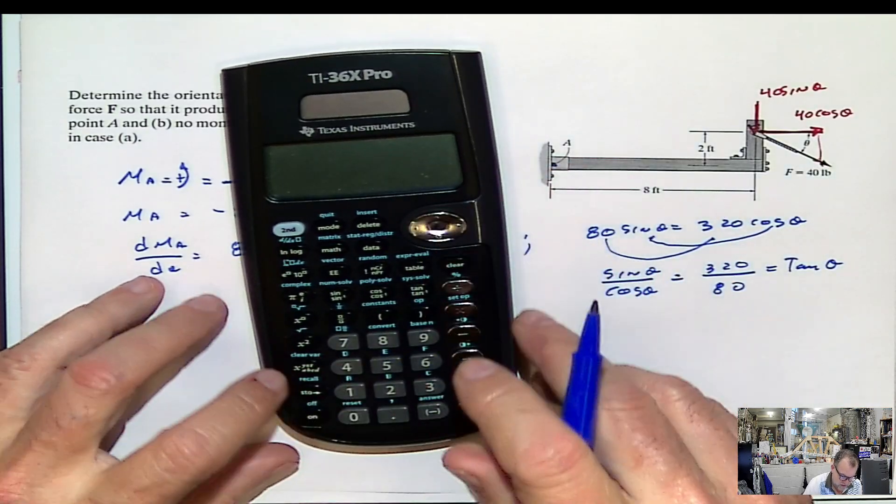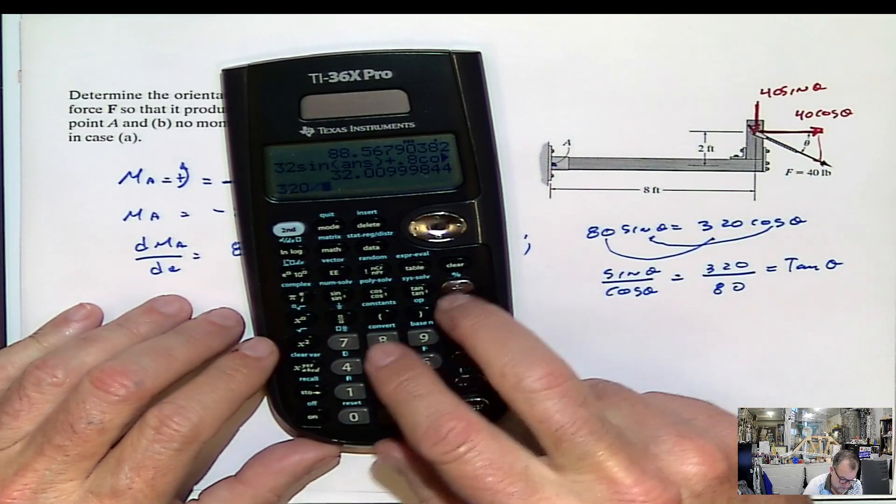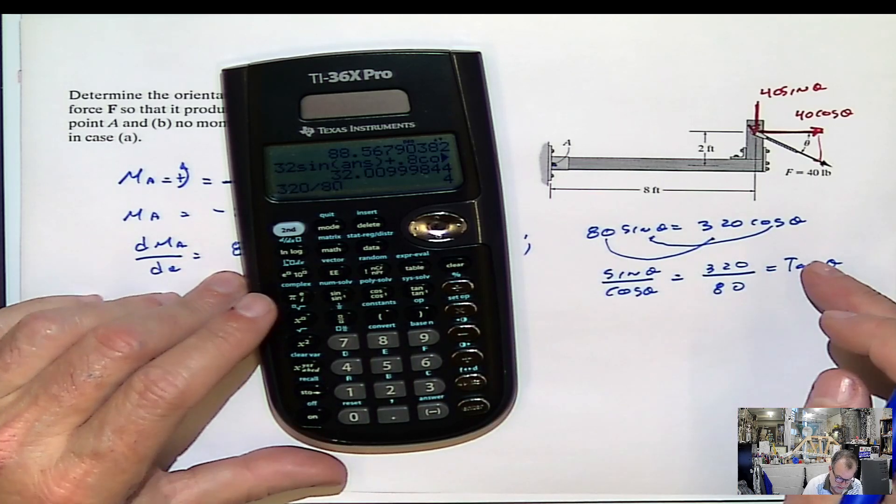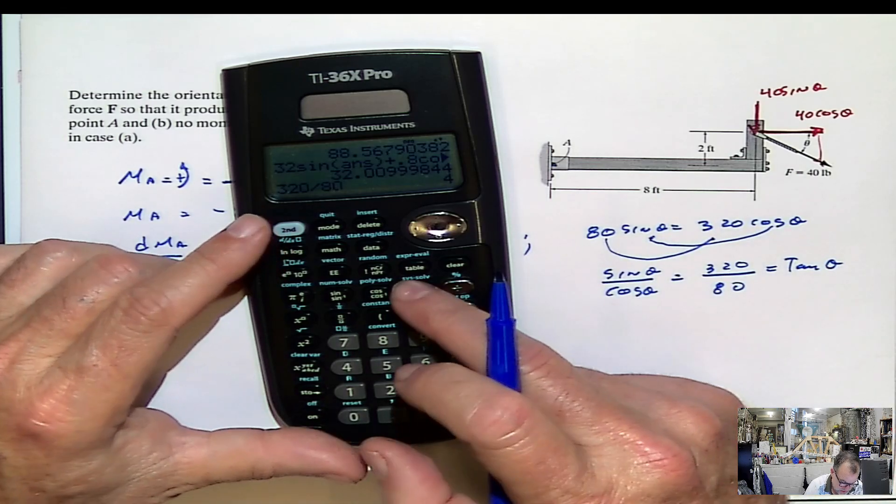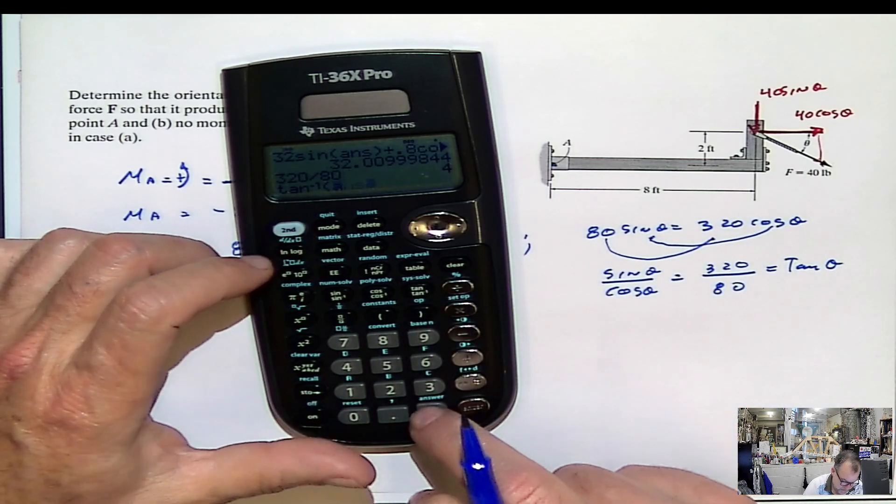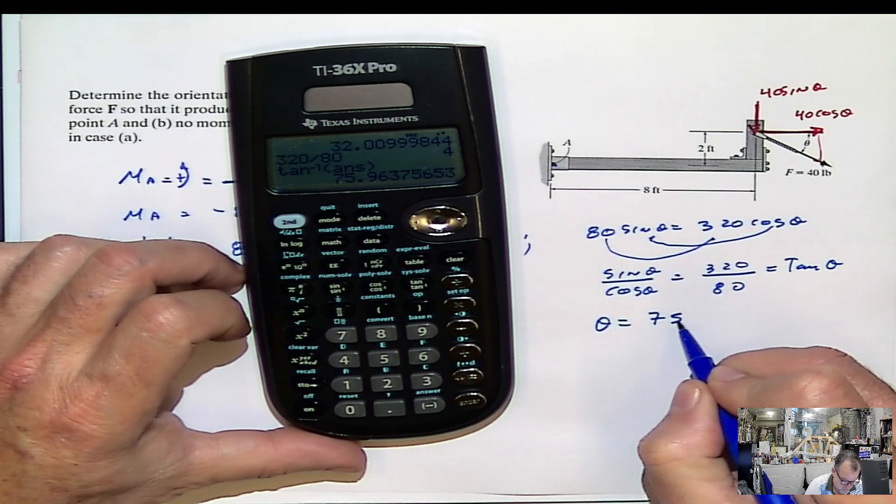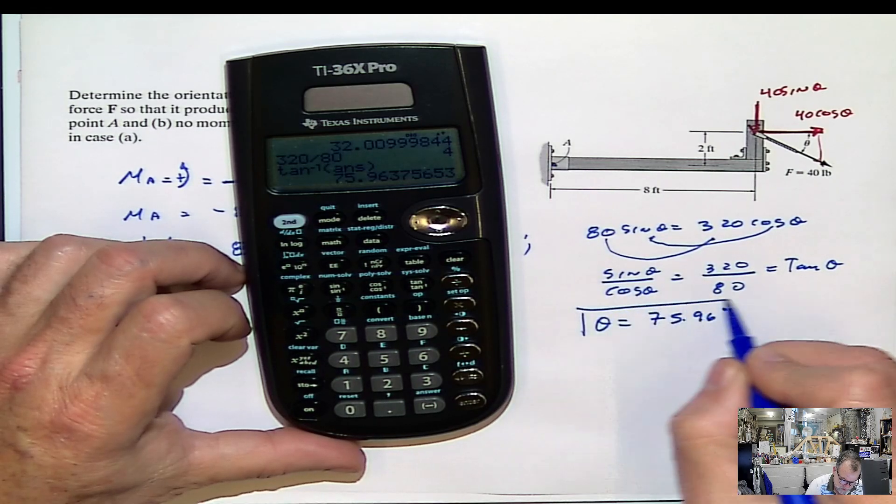So when you solve for that, 320 divided by 80, that's giving you 4. That's the tangent of the angle. So the inverse tangent of that value is going to give you the angle. The angle equals 75.96 degrees, period.